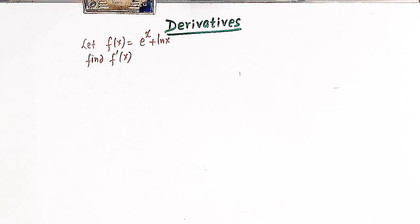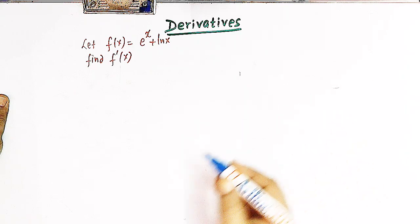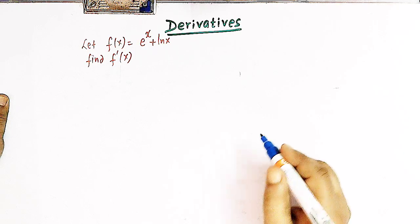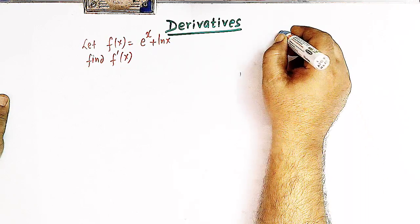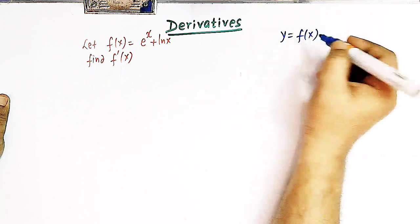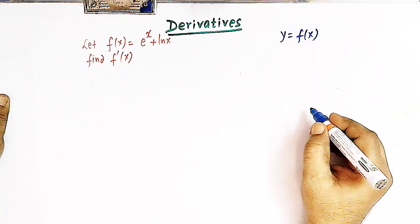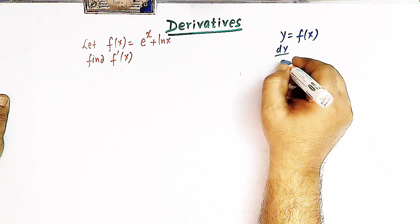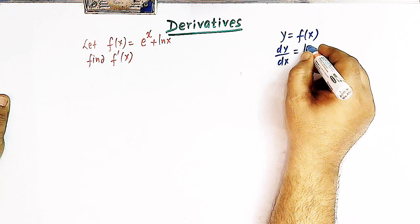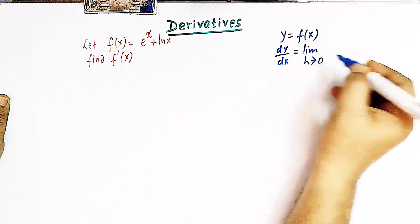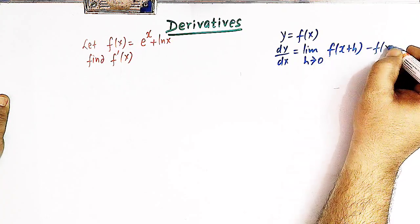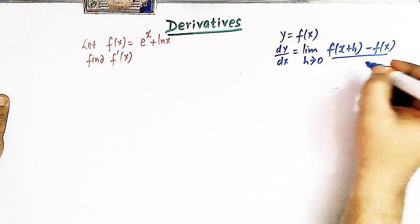We have already discussed about the first principle in our earlier videos. So here let us quickly see the definition of the derivative using the first principle. Suppose we have a function y equal to f of x which is defined in some domain D, then the derivative of y with respect to x is dy over dx, and this is given by the limit h tends to 0 of f of x plus h minus f of x divided by h.